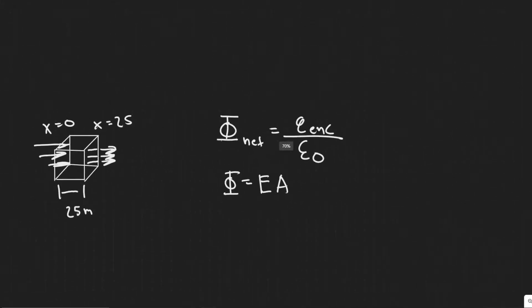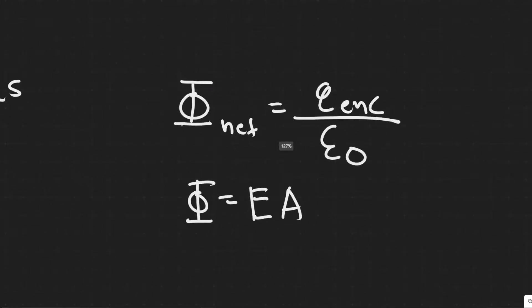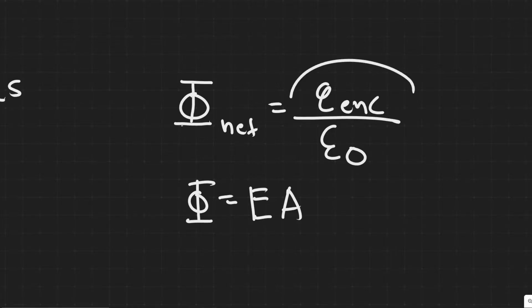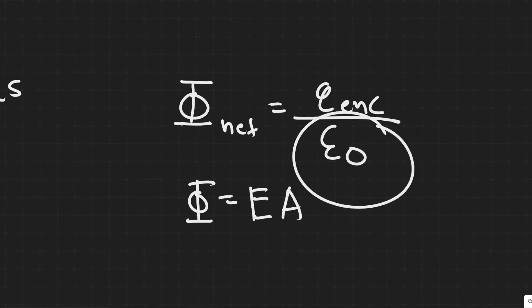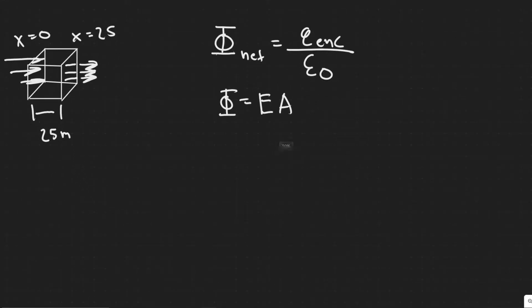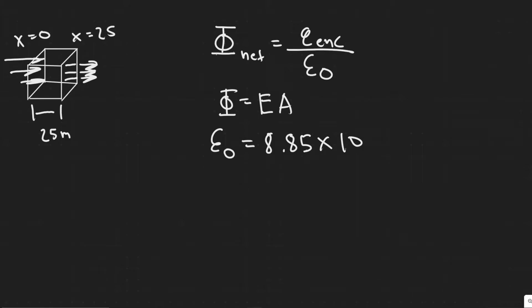The first thing you need to know is that the net electric flux is equal to the charge enclosed divided by epsilon naught. Epsilon naught is just a constant equal to 8.85 times 10 to the minus 12 farads per meter.